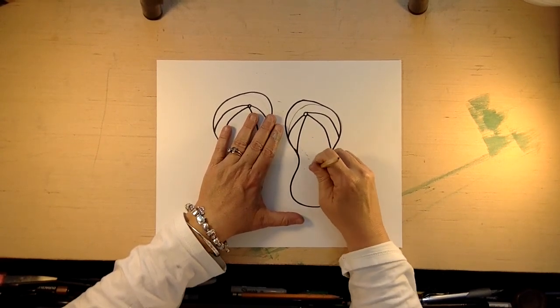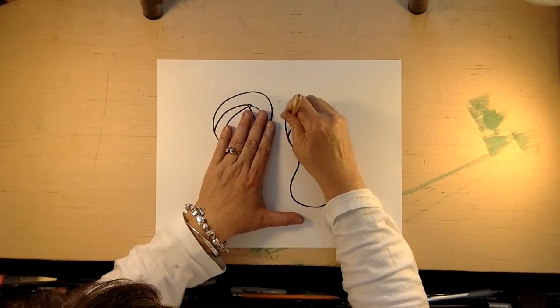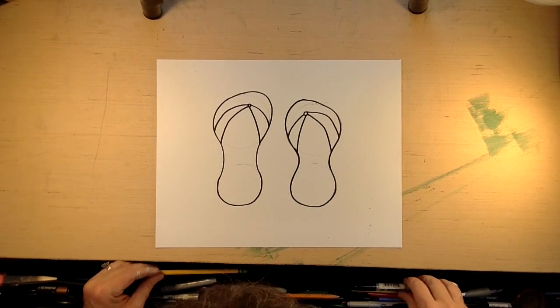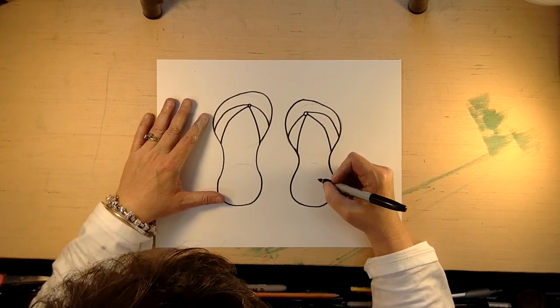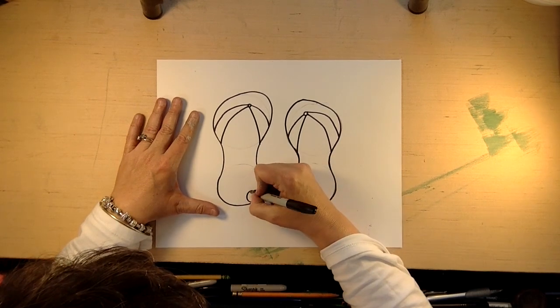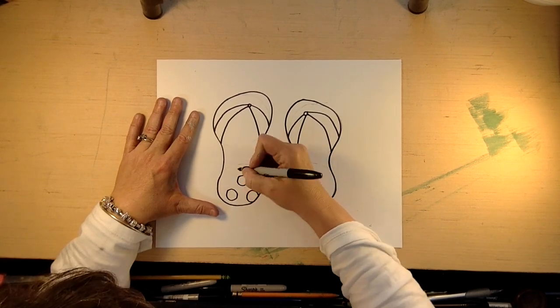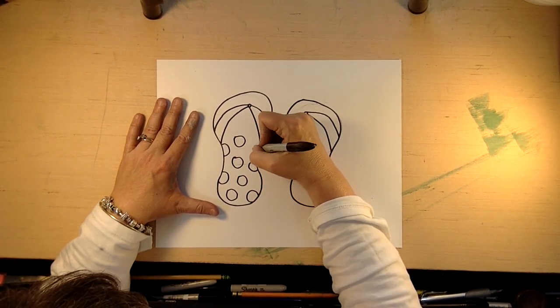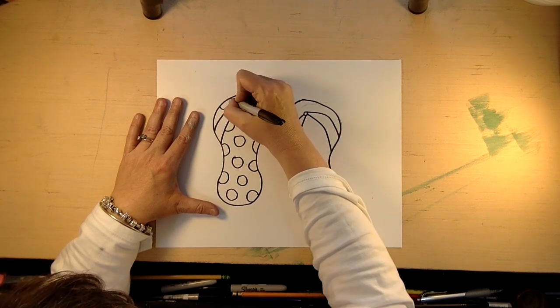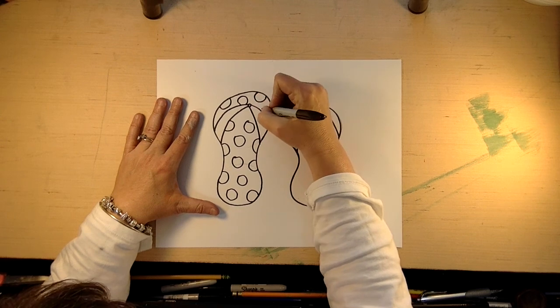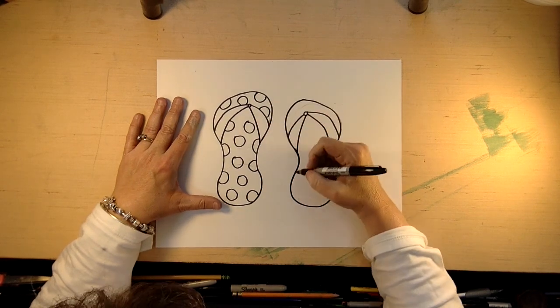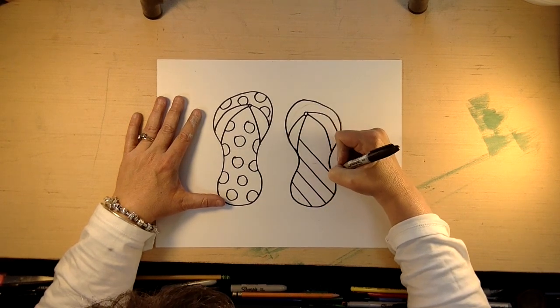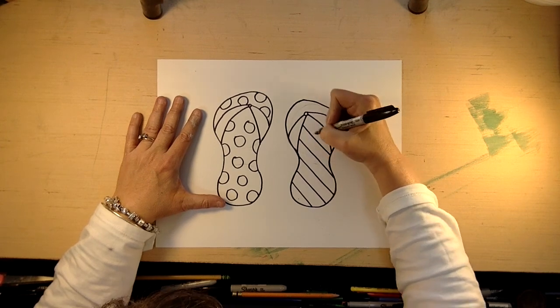Now the fun thing about flip-flops is you can decorate them. There's every different kind of flip-flops possible. So you can do flowers or you can do polka dots. Like you can make this one a polka dot one. It's alright to go off the sides. You can make them in color. Usually they're as bright as it can be. This one might be like a striped one.